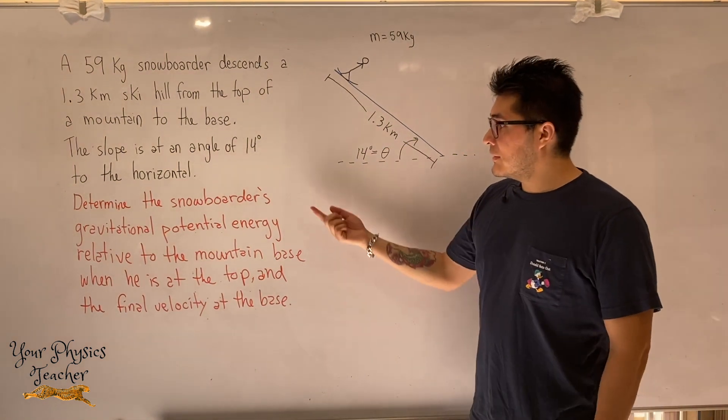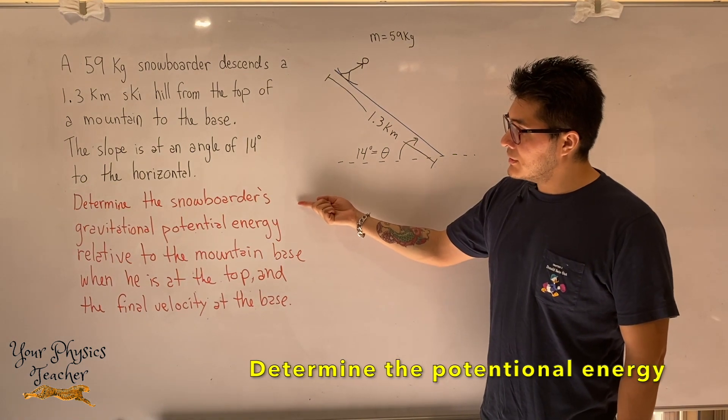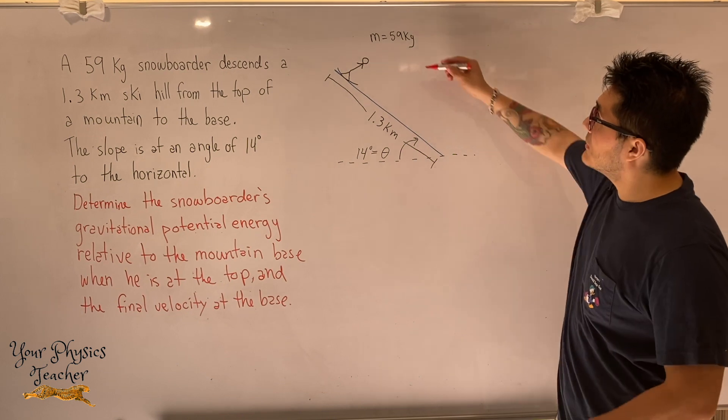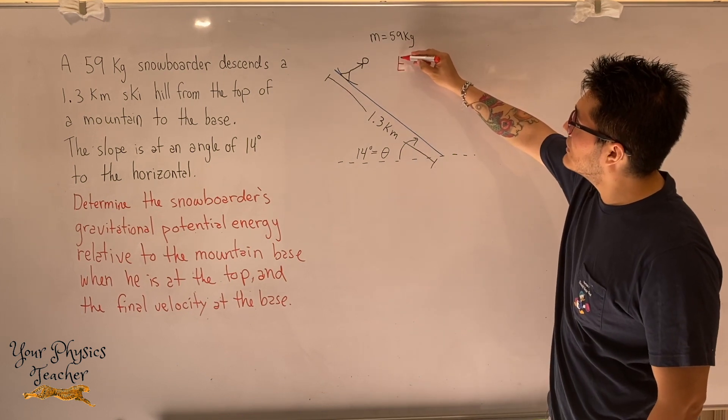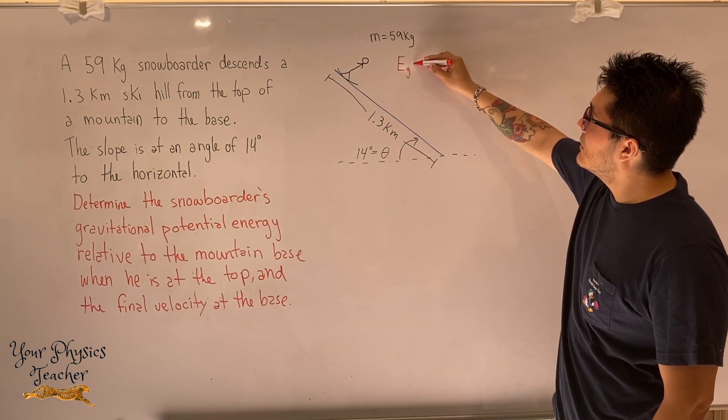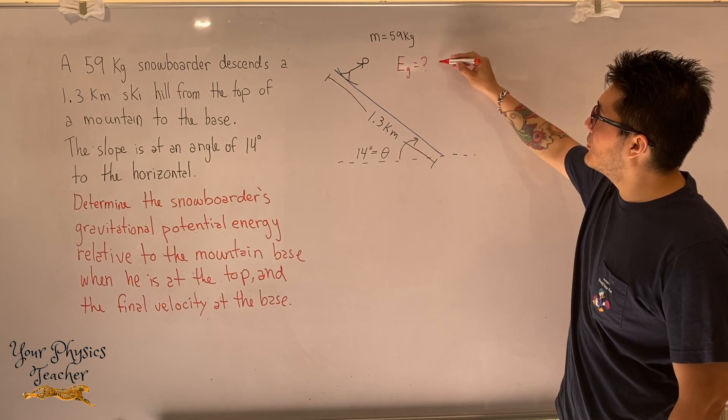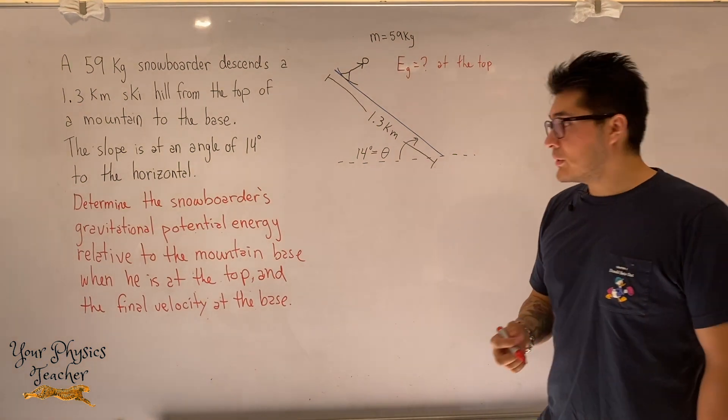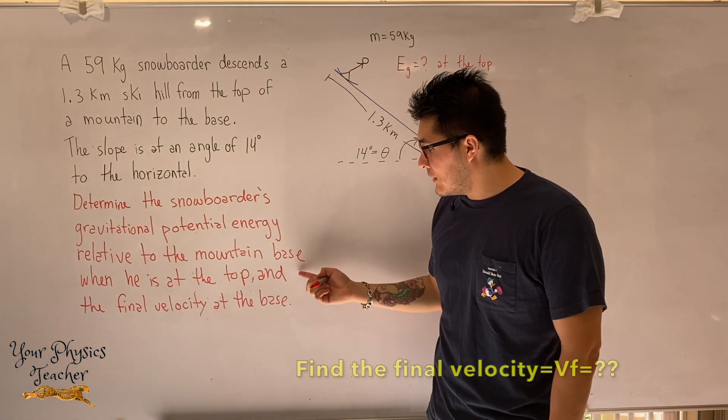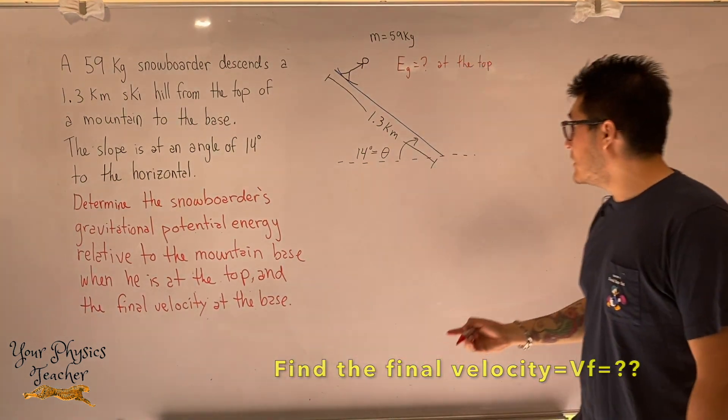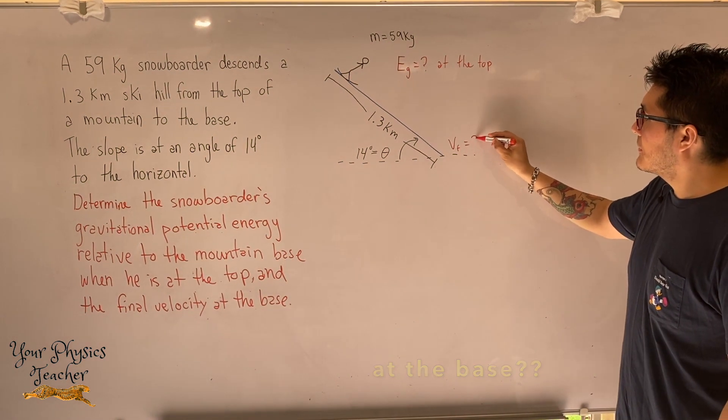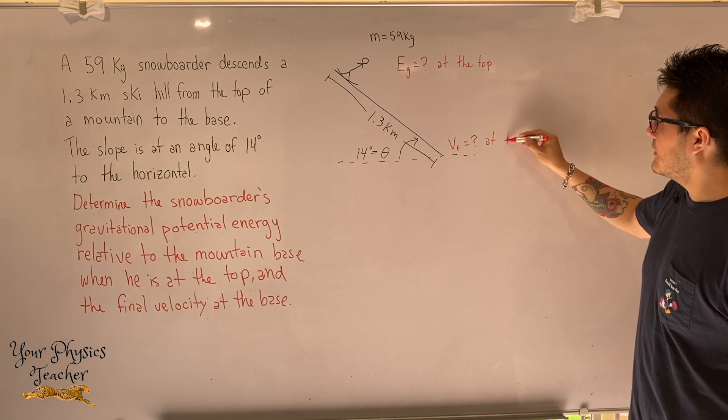Now what they're asking us to find is to determine the potential energy at the top of the mountain. So E_g equals to unknown at the top. That's what we want to find out. And the second part to this question, they're also asking us to find the final velocity at the base. So V final at the base.